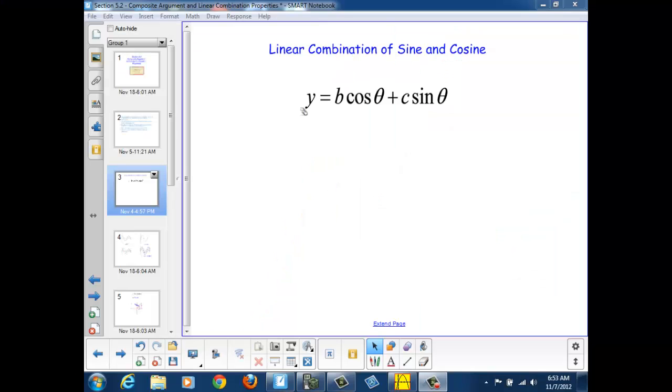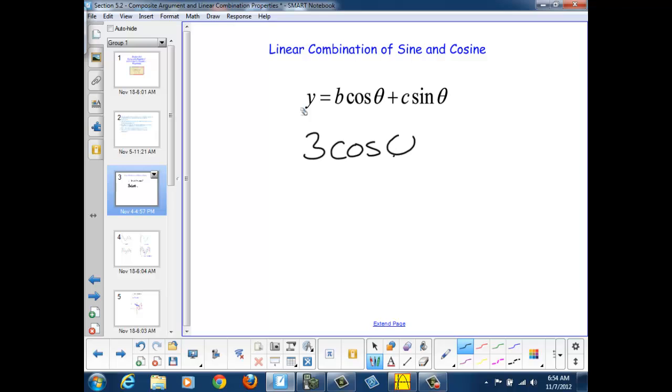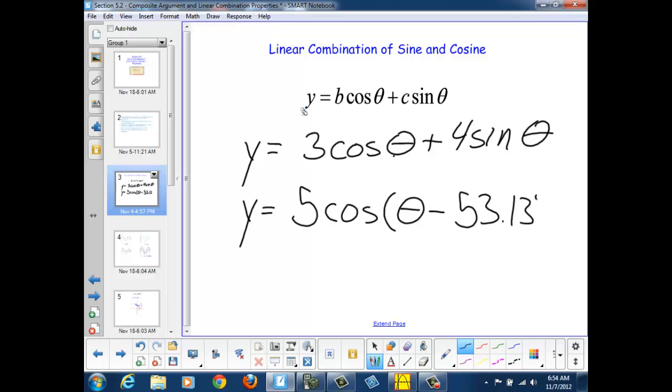We've seen that when we combine a sinusoid, for instance, 3 cosine theta plus 4 sine theta, we end up with another sinusoid. And that sinusoid turned out to be 5 cosine of theta minus a phase displacement of approximately 53.13 degrees. So the question is, where did this 5 and this 53.13 come from?